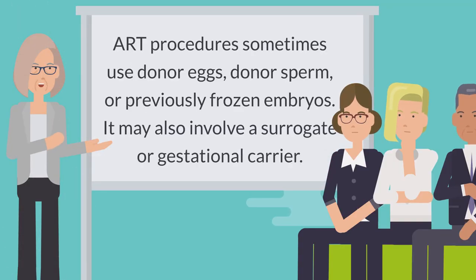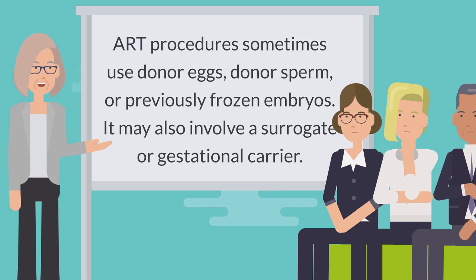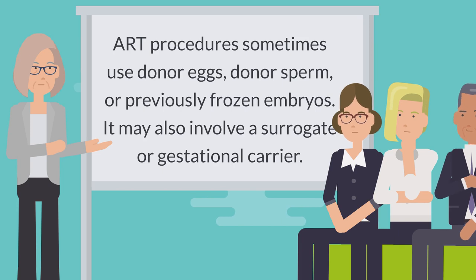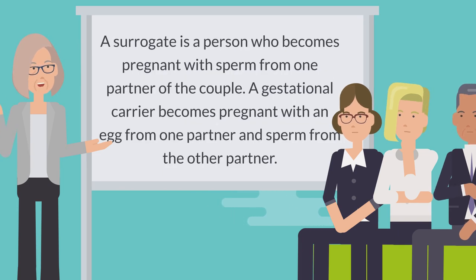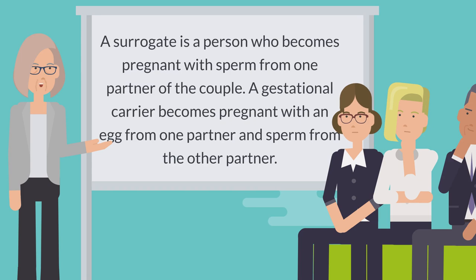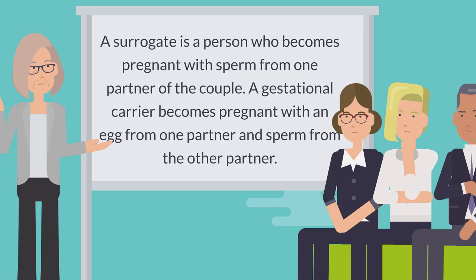ART procedures sometimes use donor eggs, donor sperm, or previously frozen embryos. It may also involve a surrogate or gestational carrier. A surrogate is a person who becomes pregnant with sperm from one partner of the couple. A gestational carrier becomes pregnant with an egg from one partner and sperm from the other partner.